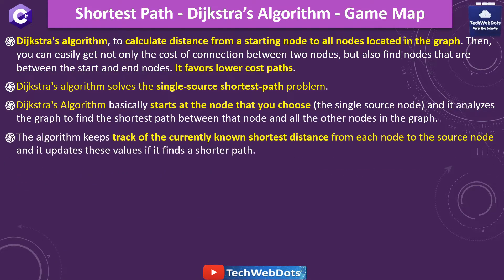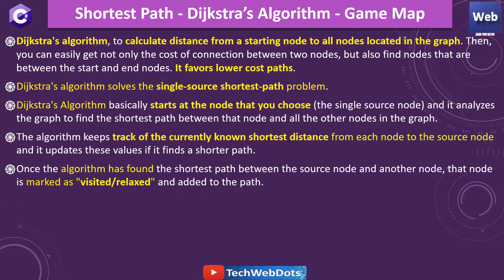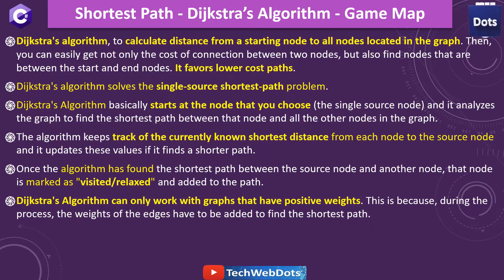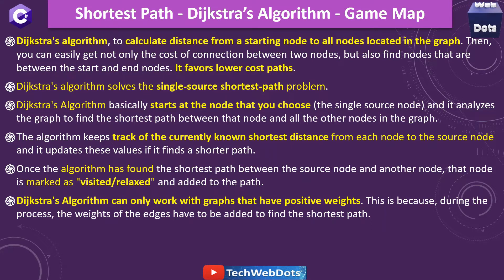Dijkstra algorithm basically starts at the node, then analyzes the graph to find the shortest path between nodes. It keeps track of the currently known shortest distance from each node to the source node so that it can update accordingly if it finds a shorter one. Once the algorithm has found the shortest path between the source node and another node, that node is marked as visited — or you can say relaxed — and added to the path. This is the way by which we can get all the visited nodes and know this is the shortest one. Also, Dijkstra algorithm can only work with positive values and cannot work with negative values — that is also a disadvantage of Dijkstra algorithm.